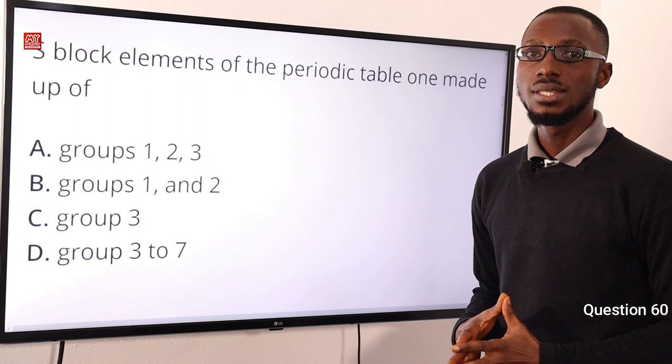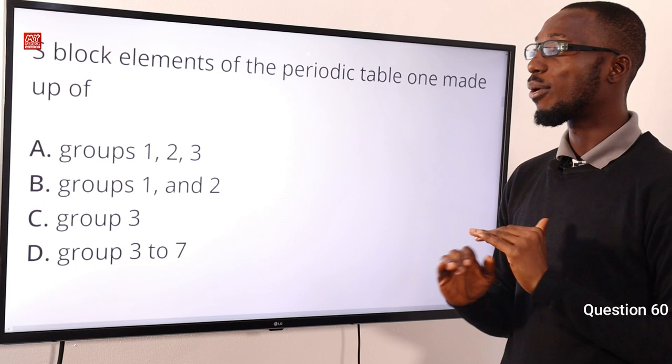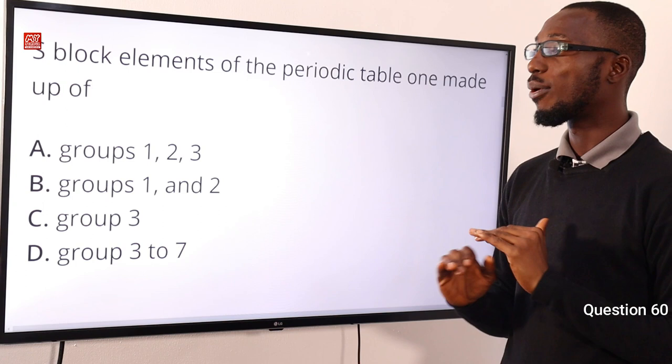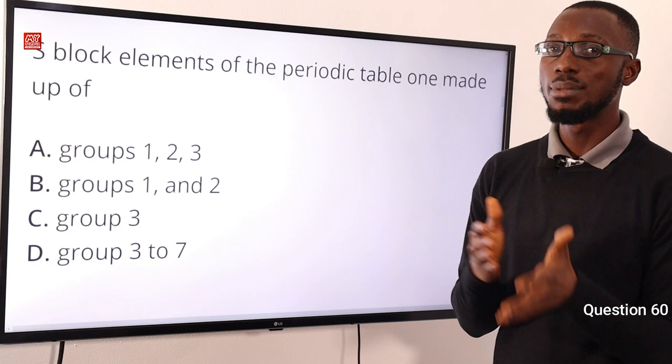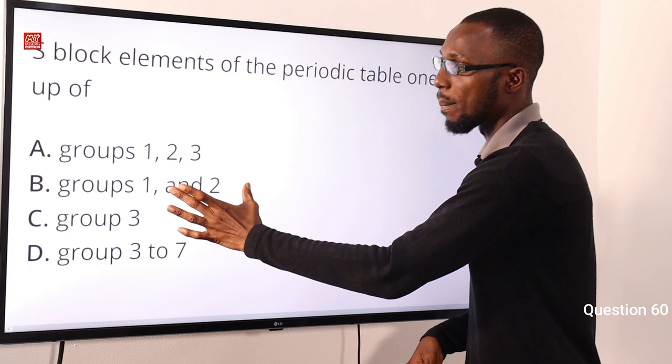Question 60: S-block elements of the periodic table are made up of groups 1 and 2. The S-block can contain a maximum of two electrons, so it covers group 1 and group 2. The correct option is option B, groups 1 and 2.